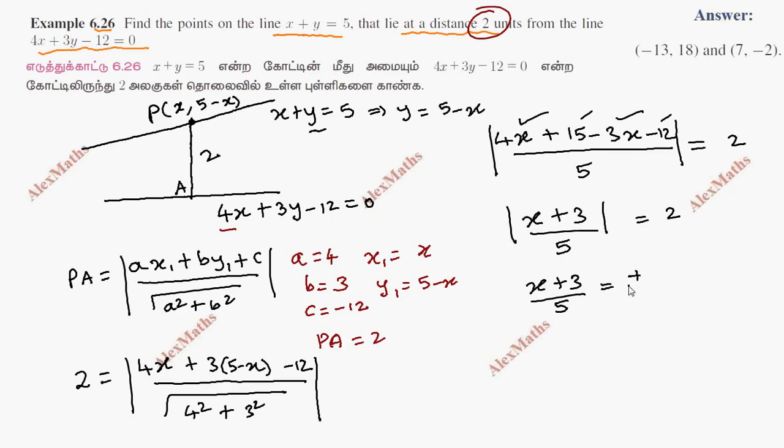And x plus 3 by 5 equals minus 2. So x plus 3 equals plus or minus 10. x equals minus 3, so minus 13 or x equals 7.